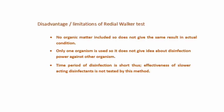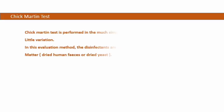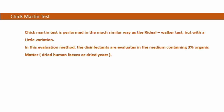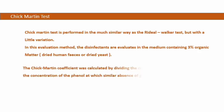Now we come to the Chick Martin test. Chick Martin test kaafi kuch Ridel Walker test ki tarah hi hai — isme main difference yeh hai ki isme test medium mein 3% organic matter bhi add kiya jaata hai. Yeh organic matter dried yeast ya dried human feces hota hai. Chick Martin coefficient calculate kiya jaata hai by dividing the higher dilution of test disinfectant — jo phenol ki concentration ki tarah same effect deti hai — yani jo dilution bacteria ko kill kar rahi hai, use divide karte hain phenol ki us higher dilution se jo usi microorganism ko kill kar rahi hai. Is value ko Chick Martin coefficient kaha jaata hai.